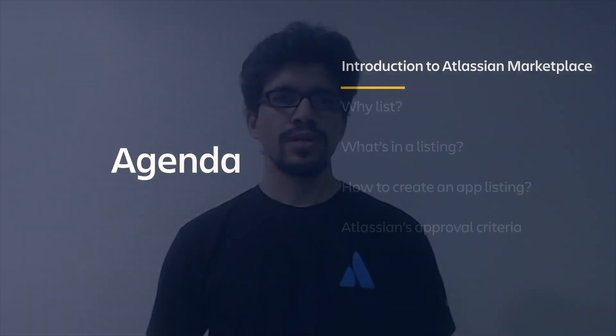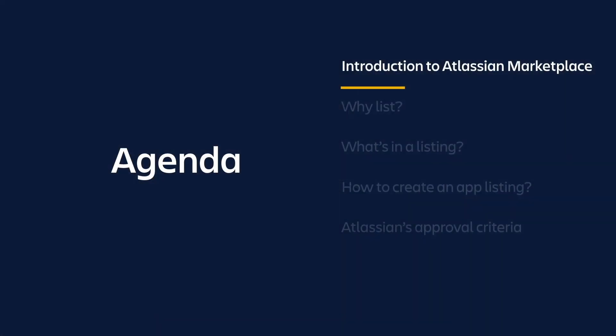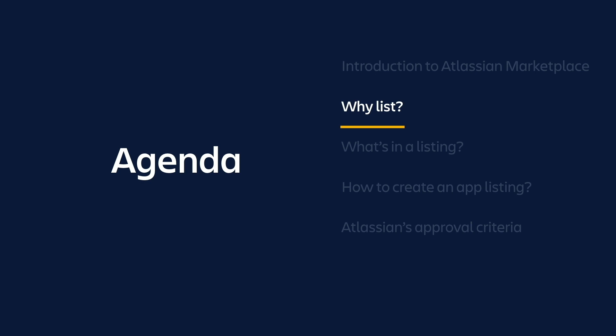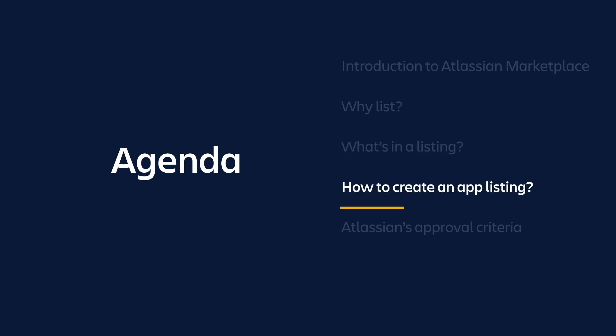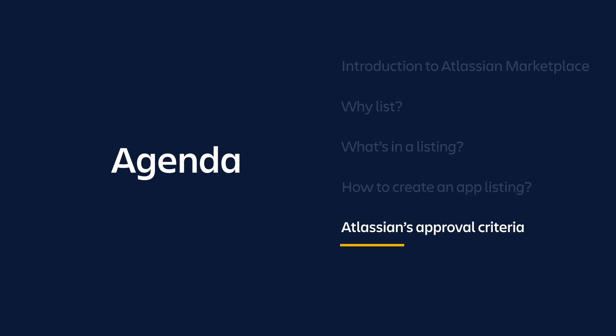Before we go further, let's take a look at the agenda for this episode. We'll start off by getting familiar with the Atlassian marketplace — understanding what it is and why it's beneficial to app developers. Then we are going to talk about what makes up a listing, give a good example and a bad example, and break down the elements of a listing. Next, we'll walk you through the listing creation process, highlighting common areas of confusion and how to resolve them. Lastly, we are going to talk about the approval criteria from our team's point of view — who is responsible for approving apps and what we look for.